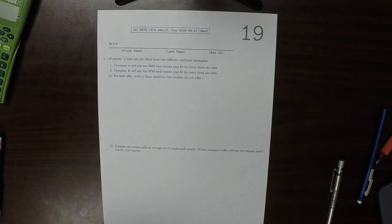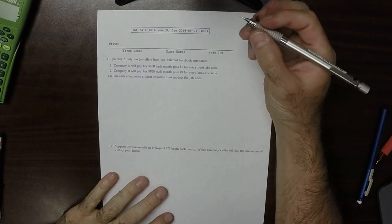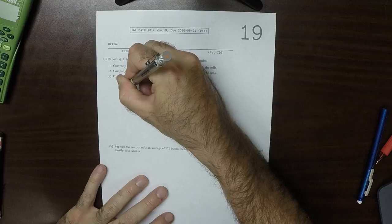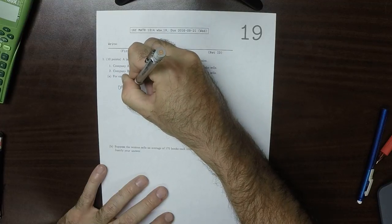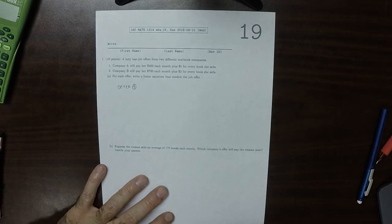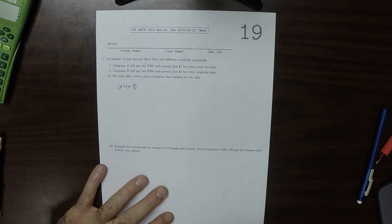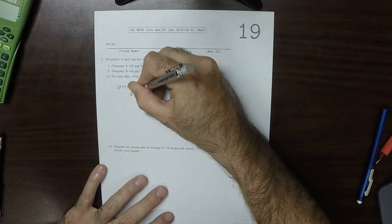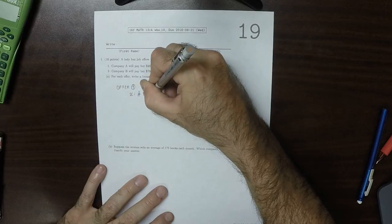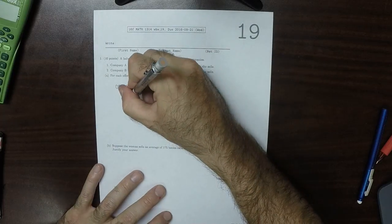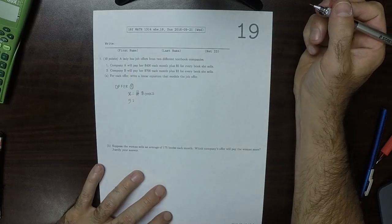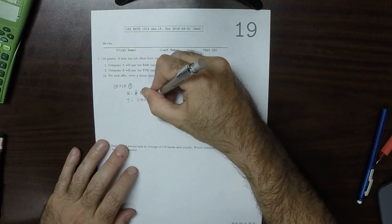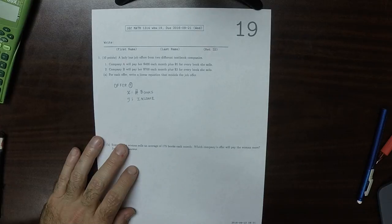This is the solution to written homework 19. So for offer 1, if we say that x is the number of books and y is the income as a result of that number of books, then what offer 1 is saying...